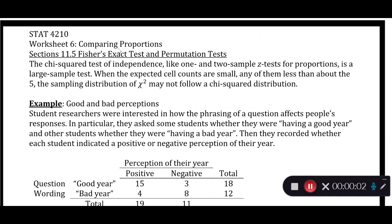The chi-squared test of independence, just like 1 and 2 sample Z tests for proportions, depends on having a large sample. When we talk about having the expected cell counts being greater than 5, that means we have a large enough sample such that we would expect at least 5 observations in each cell.